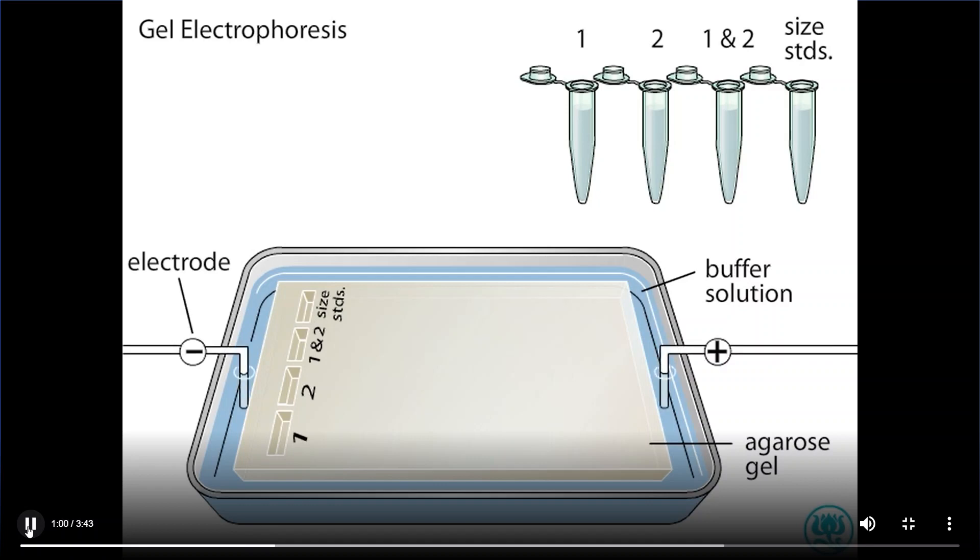The DNA solutions, to which blue dye is added, are then pipetted into the wells. A well is also reserved for the placement of DNA of known sizes, and then the power supply is turned on.